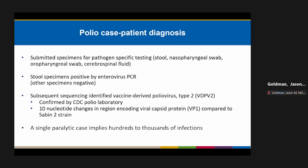As part of the workup, specimens including stool, NP, OP, and CSF were submitted. The stool specimen was positive for enterovirus by PCR. Subsequent sequencing identified a vaccine-derived polio virus type 2, or VDPV2. This was confirmed by the CDC polio laboratory; the sequence indicated 10 nucleotide changes in the region encoding the viral capsid protein VP1 compared to the Sabin strain, indicating the virus had likely been circulating for about a year. A single paralytic case implies hundreds or possibly thousands of infections.